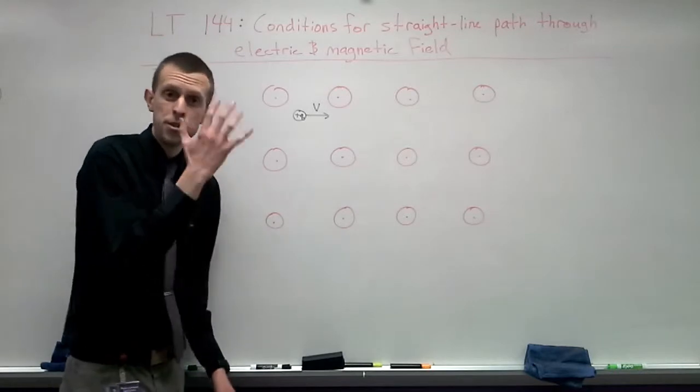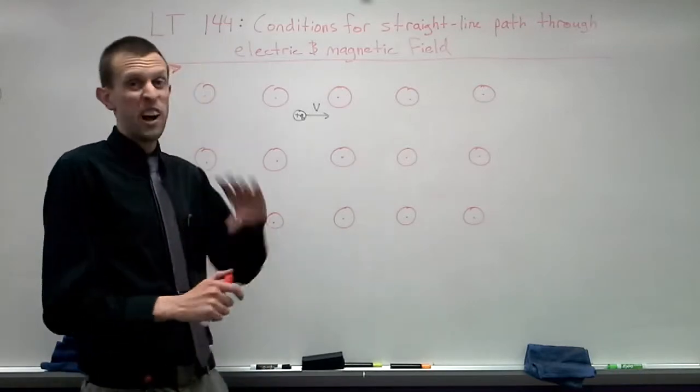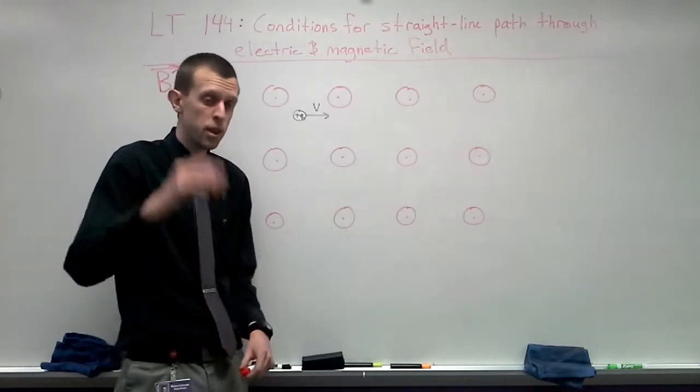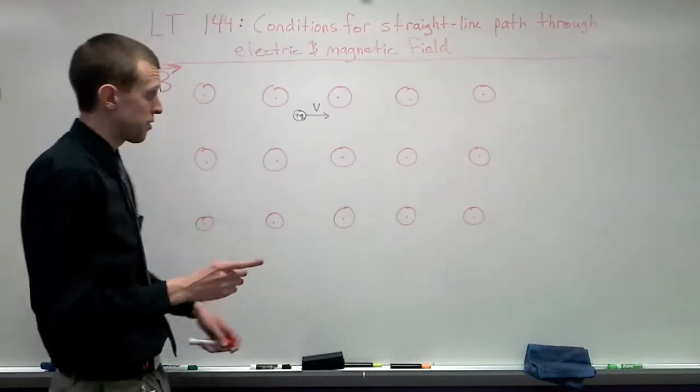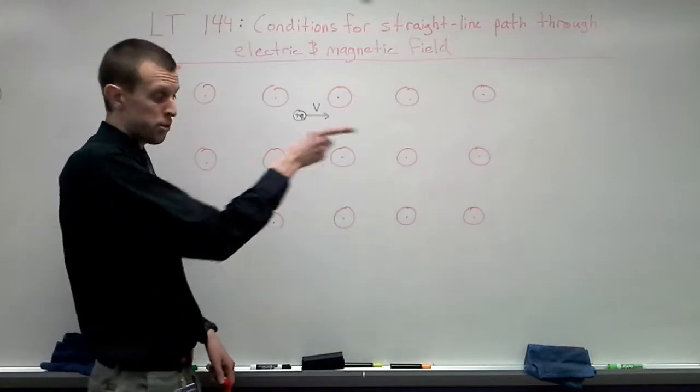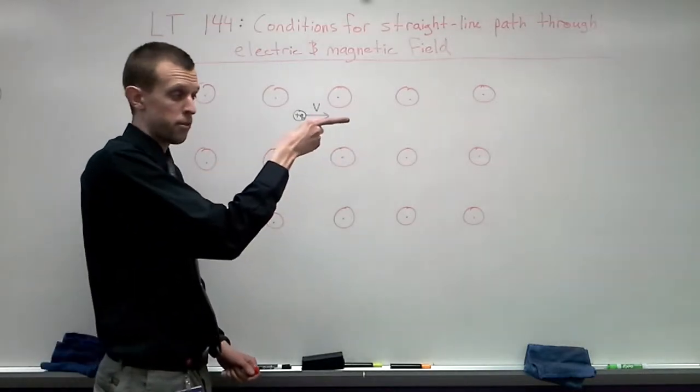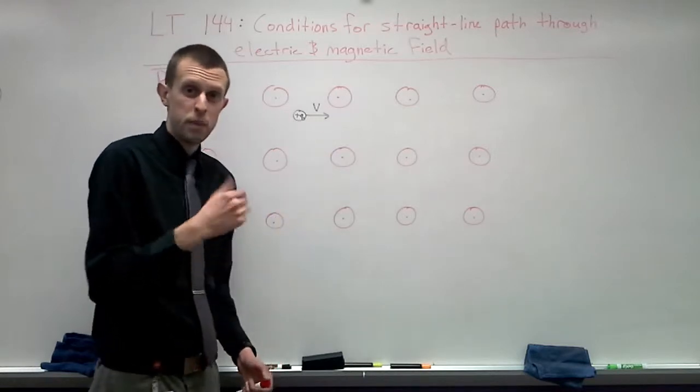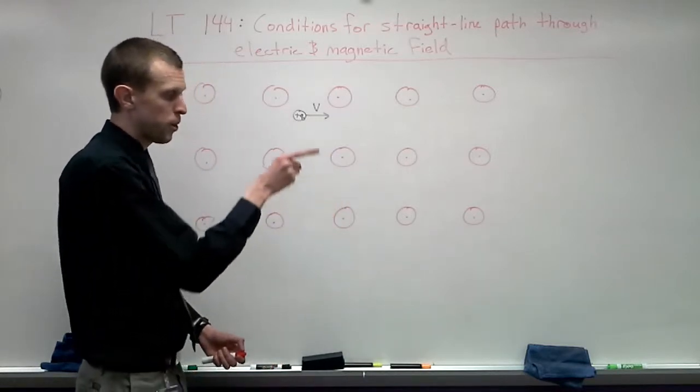So let's think about what direction it would want to move just because of this magnetic field first off. So we've got a positive charge, so it's the right hand rule. We can do the left hand rule if it's a negative charge or just flip directions at the end, but right hand rule don't have to flip directions with a positive. Our pointer finger goes in the direction of the velocity vector. The middle finger goes in the direction of the magnetic field, the B field.